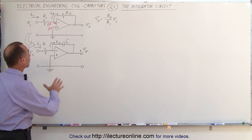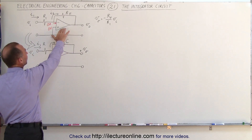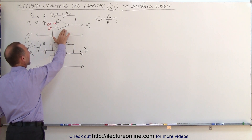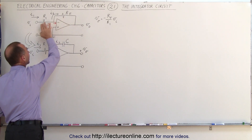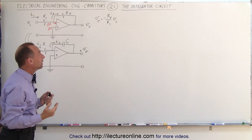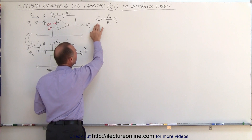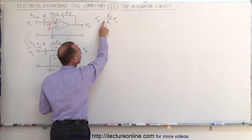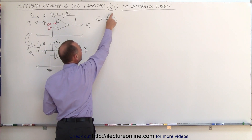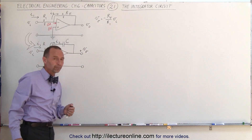Here we have our original circuit using the operational amplifier where we have a feedback resistor and an input resistor. We know that in this case the output voltage will be equal to the negative of the ratio of the feedback resistor to the input resistor times the input voltage.